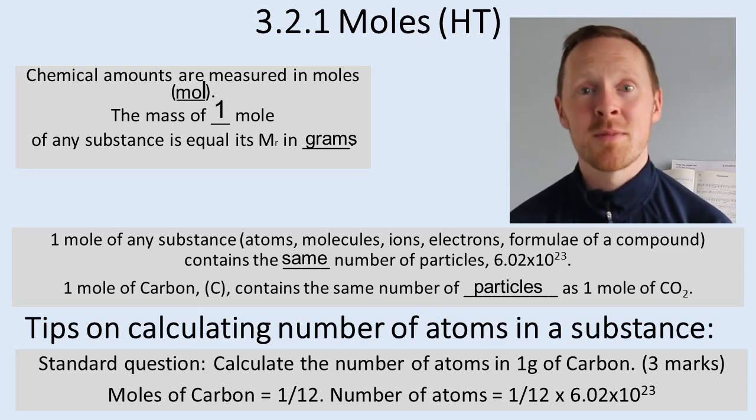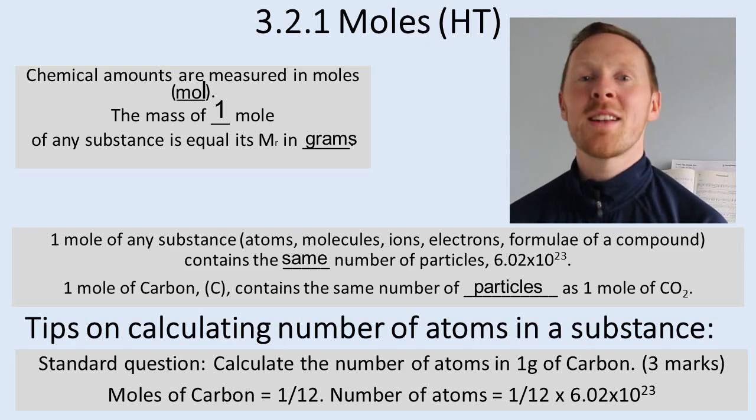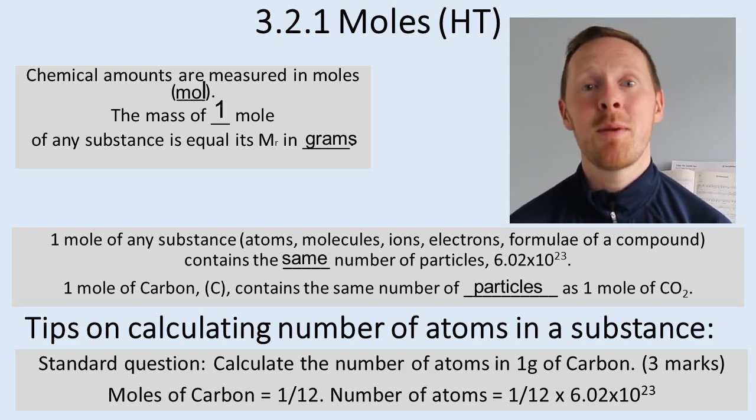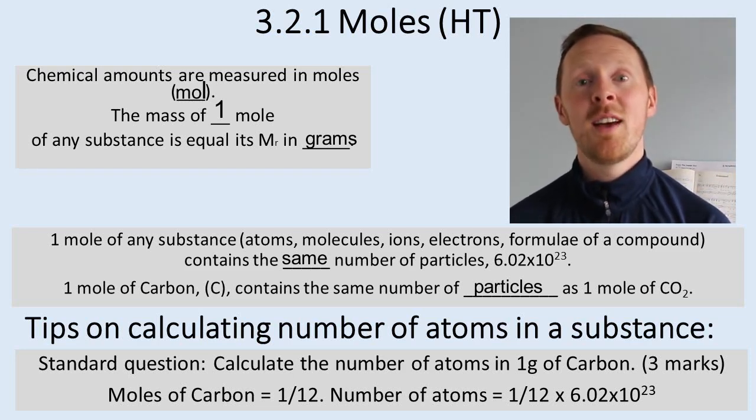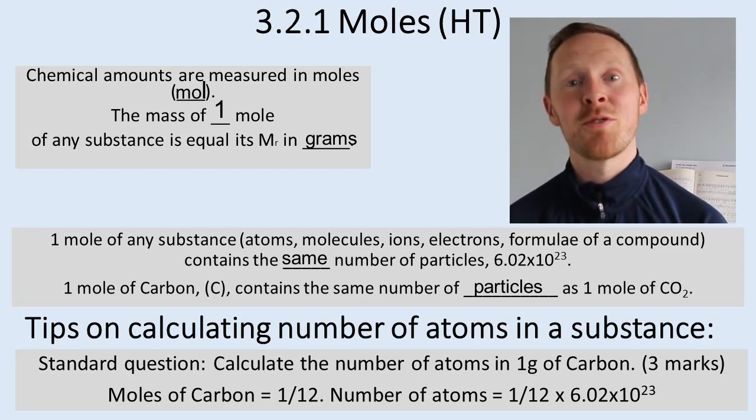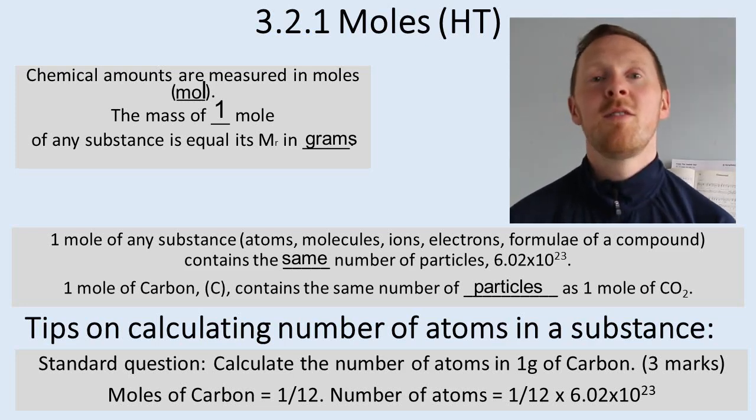So if you were asked to calculate the number of atoms in a substance, what you need to work out is the relative atomic mass of the substance, and then you just do the mass that you have of the substance divided by the relative atomic mass to calculate the number of moles, and then you multiply that by Avogadro's number, 6.02 times 10 to the 23.